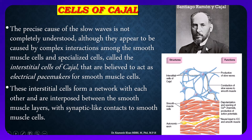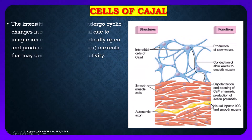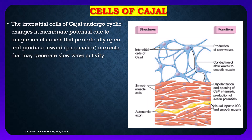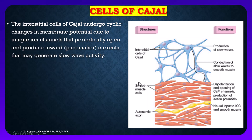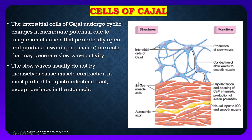The interstitial cells of Cajal form a network and are interposed with the smooth muscle of the gastrointestinal tract. These interstitial cells undergo cyclic changes in membrane potential due to unique ion channels that periodically open and produce inward pacemaker currents that may generate slow wave activity.